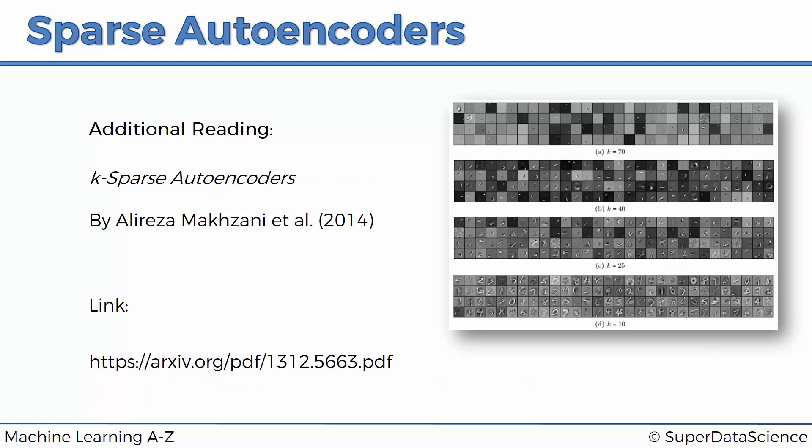And finally, very strong, powerful, heavy artillery paper on sparse autoencoders. It's called K Sparse Autoencoders by Alireza Makhzani, 2014. And it basically takes this whole sparse autoencoder concept to a whole new level where it talks about a parameter K which allows you to control the sparsity of the autoencoder. You got some examples over here on the right. You might find this paper interesting if you want to learn more about sparse encoders. I actually would encourage you to